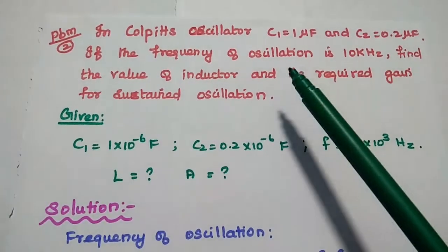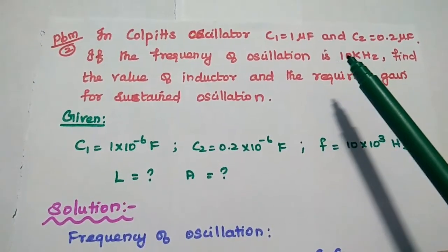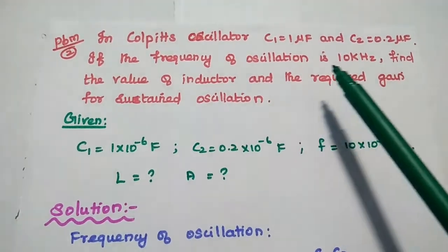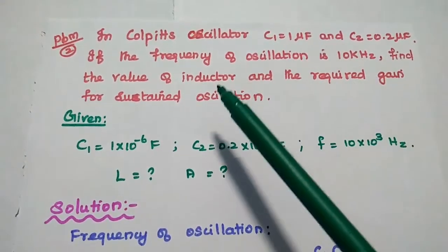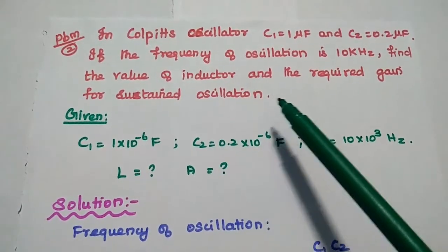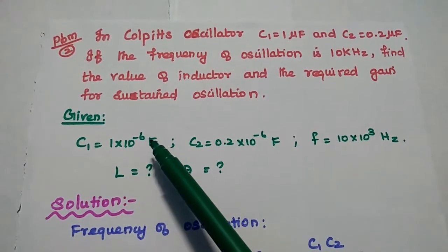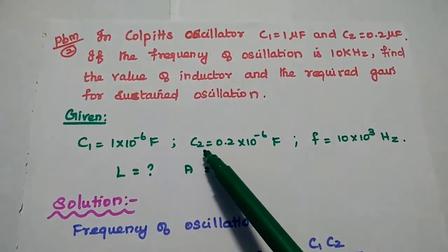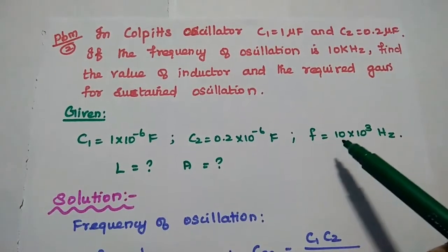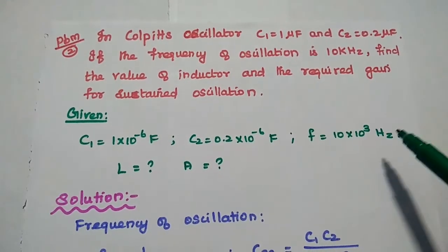Next problem: in a Colpitts oscillator, C1 is equal to 1 microfarad, C2 is equal to 0.2 microfarad, and the frequency of oscillation is 10 kilohertz. Find the value of inductor and the required gain for sustained oscillation. Given: C1 = 1 × 10⁻⁶ farad, C2 = 0.2 × 10⁻⁶ farad, and F = 10 × 10³ Hz.